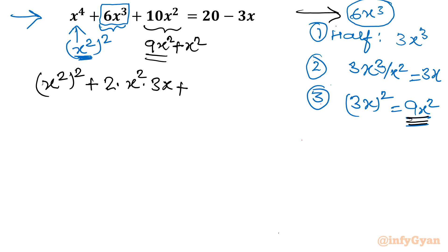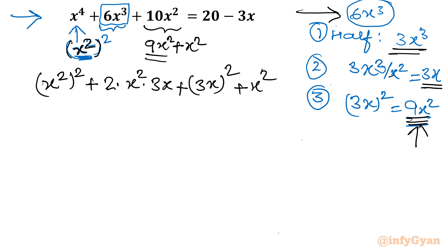Let me repeat one more time. 6x³: first consider half of the cubic term, whatever it is. So half is 3x³. Then divide by the number whose square is the leading term — that number is x². Divide 3x³ by x² and we get 3x. The square of this, 3x, is needed — that is, 9x² is needed. If you can manage to get 9x² in the equation, the problem is done using this method.